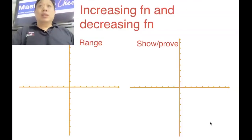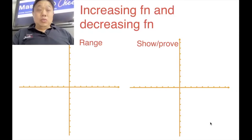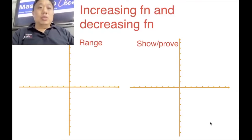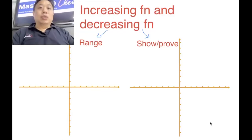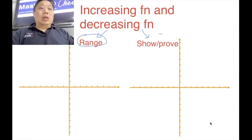So for increasing function and decreasing function, your main skills that you need to know are separated into two keywords. The two keywords you can spot in the question are the word 'range' or 'show and proof'.